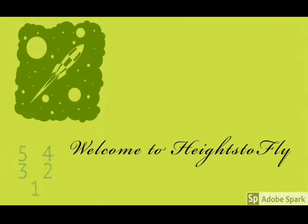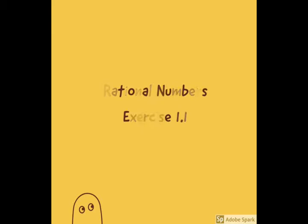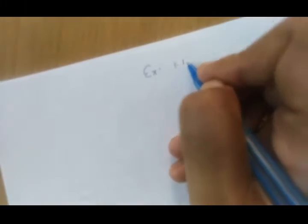Hi all, welcome to Hides to Phi. Today we are discussing more problems relating to rational numbers and representation and also through number systems. Exercise discussed in the textbook as 1.1. This is a problem relating to number systems and rational numbers.